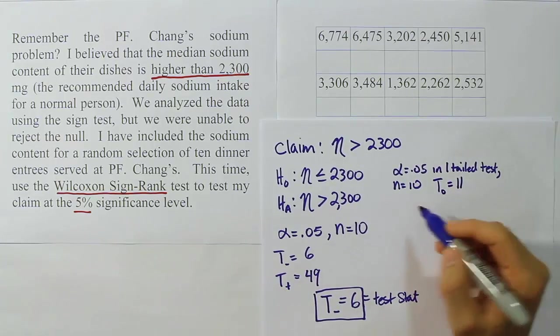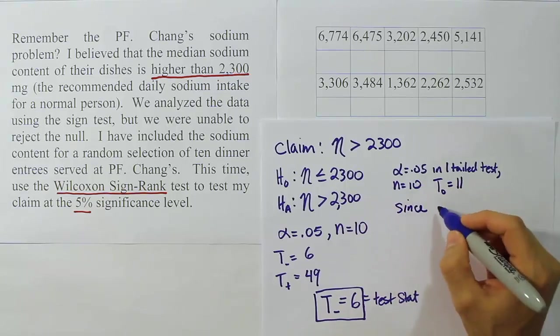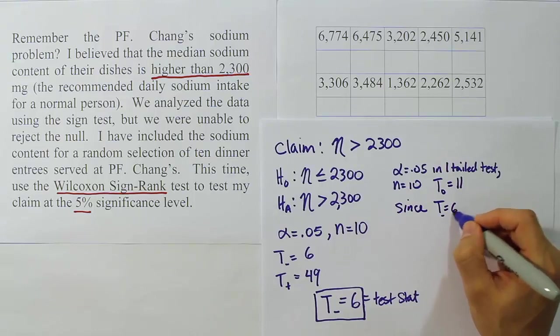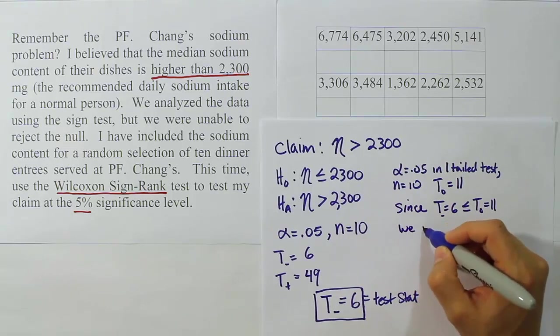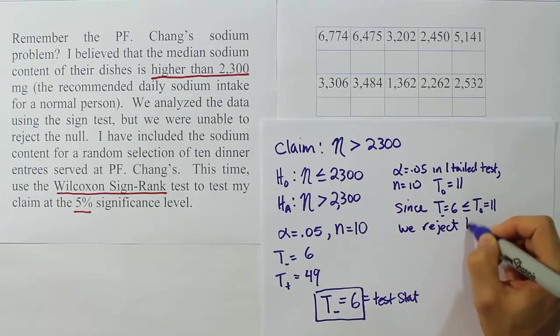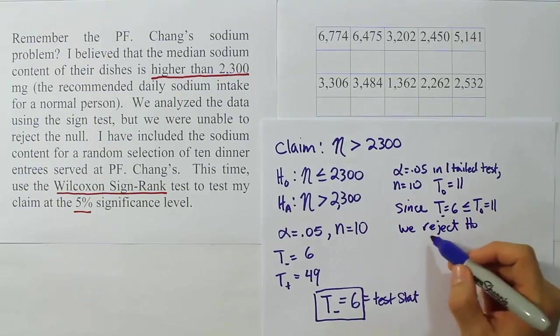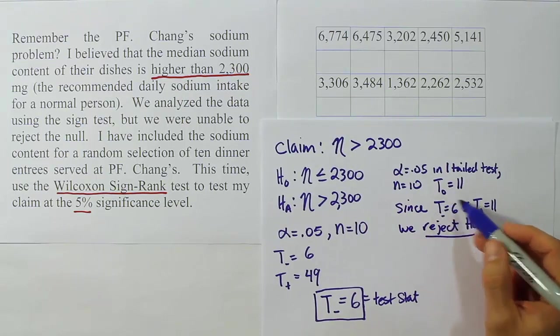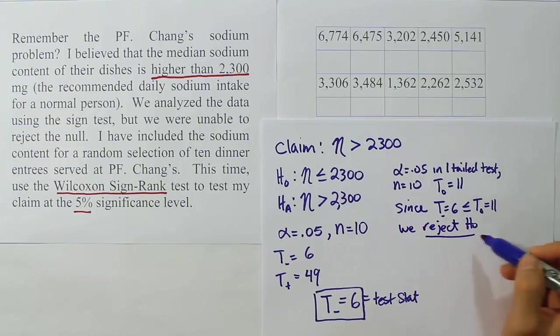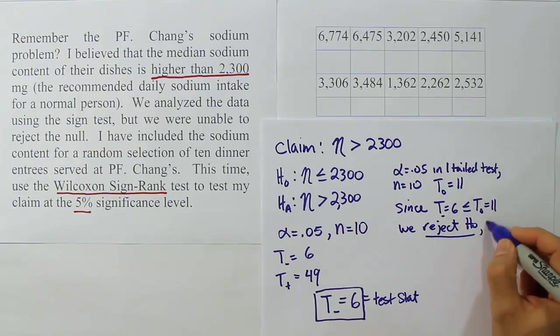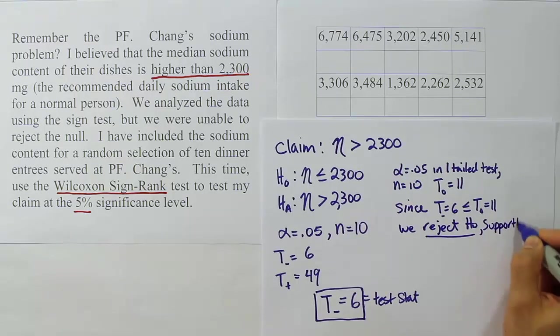So our T critical value, our T_0 value, turns out to be 11 in this problem. So what that means is that since our test stat, T negative, which is equal to 6, is less than or equal to T_0, which is 11, we reject H_0. Remember, that's the rejection condition. If your test statistic is less than your critical value or equal to your critical value in this test, we reject H_0. So if you reject H_0, of course you support H_A.